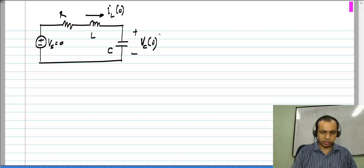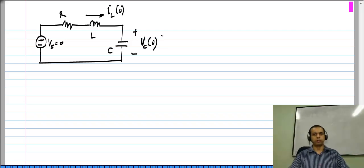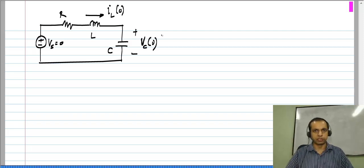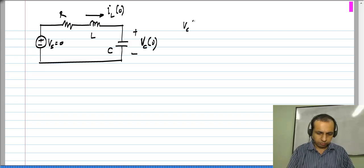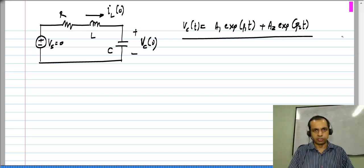Now, this is how initial conditions are normally given, but it could be something else also. You could give the initial condition on the capacitor voltage and its first derivative, or the initial condition on the inductor current and its first derivative. Then you have some more algebraic manipulation to do. So we know that V_c(t) is A_1 exponential P_1 t plus A_2 exponential P_2 t if the roots are real and distinct.